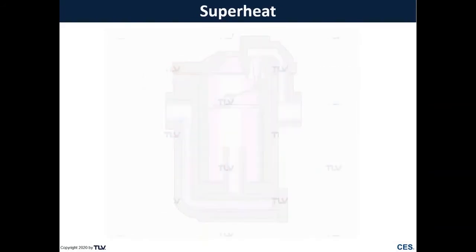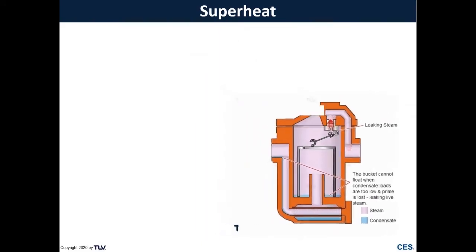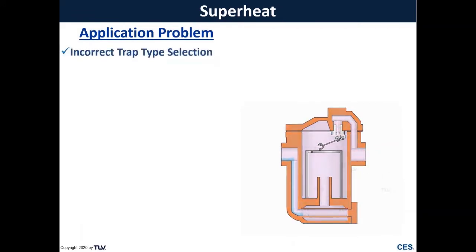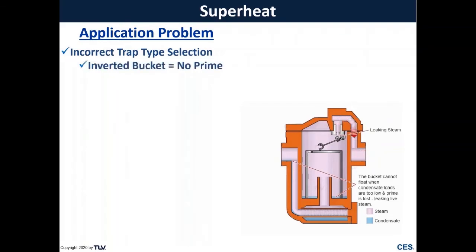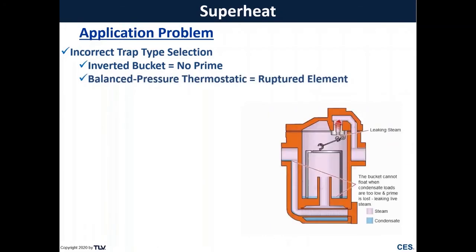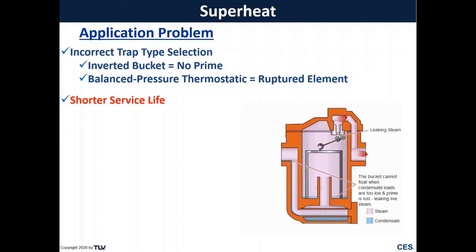Next is superheat — a specific application where steam is at a higher temperature than saturation. Selecting the incorrect trap type can cause issues. For an inverted bucket, superheated steam has a low condensate load, and the extra heat evaporates condensate in the trap, so the bucket won't have prime and can't float up to close, causing the trap to leak through. For a balanced pressure capsule thermostatic trap, the extra heat causes the capsule to overexpand and rupture, failing it open. Superheated steam leaks can also be dangerous because they're invisible — no steam plume.